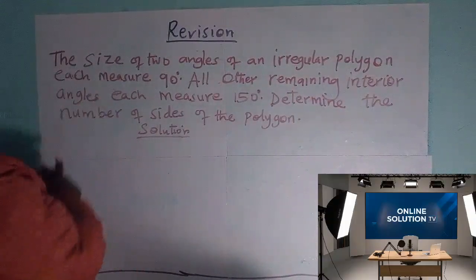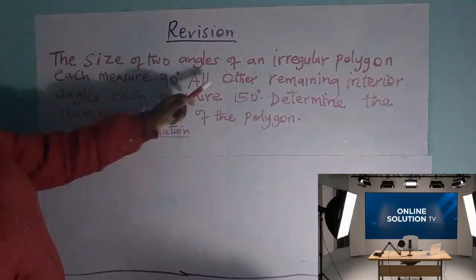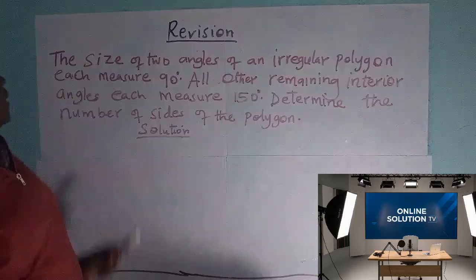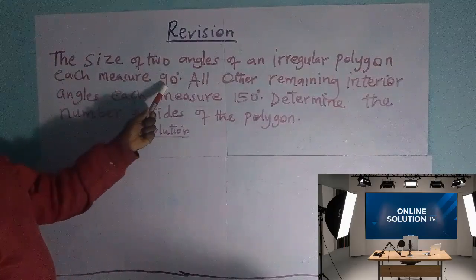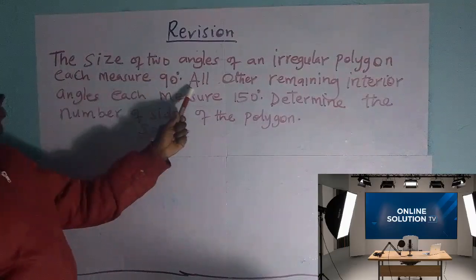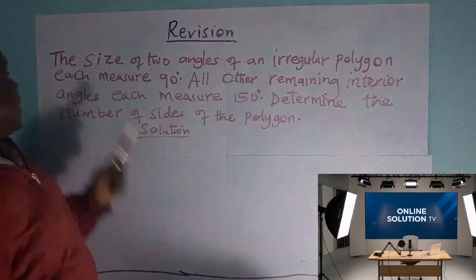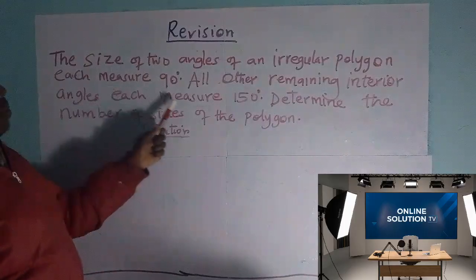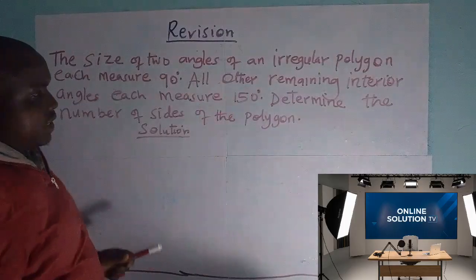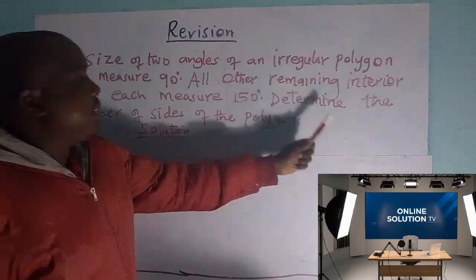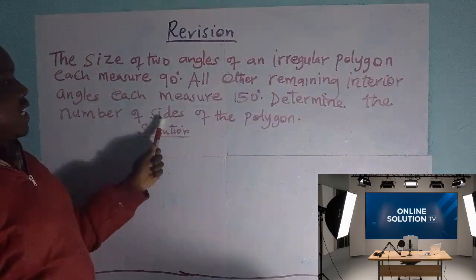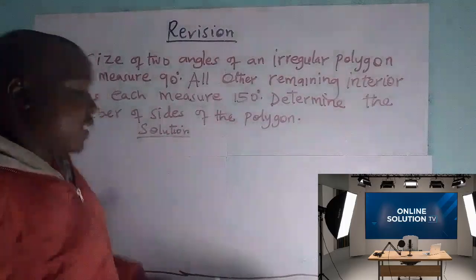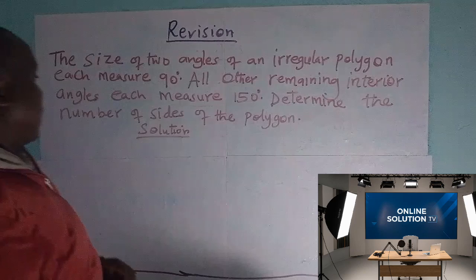The size of two angles of an irregular polygon each measures 90 degrees. All other remaining interior angles each measure 150 degrees. Determine the number of sides of the polygon.